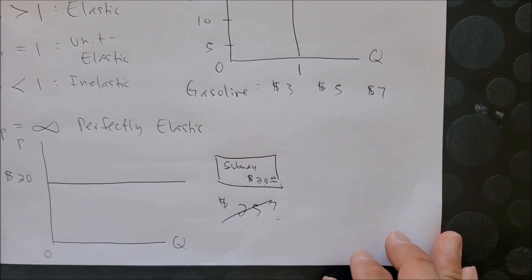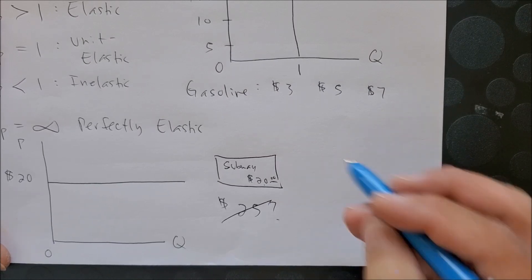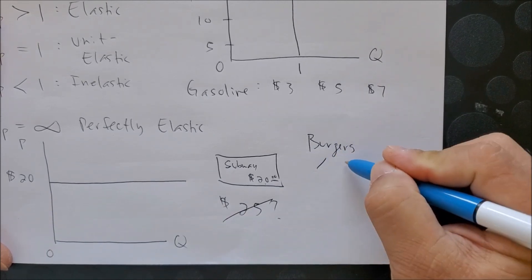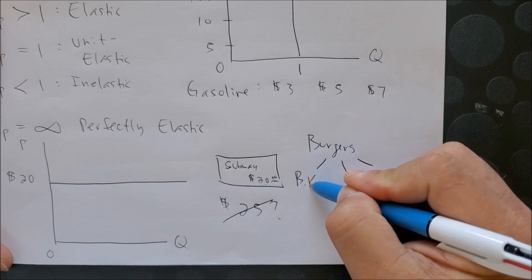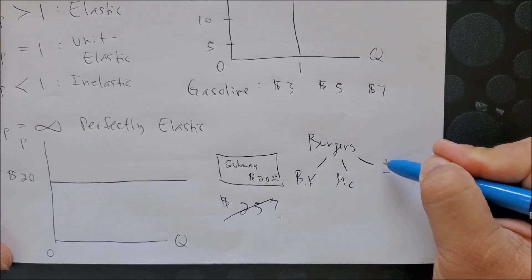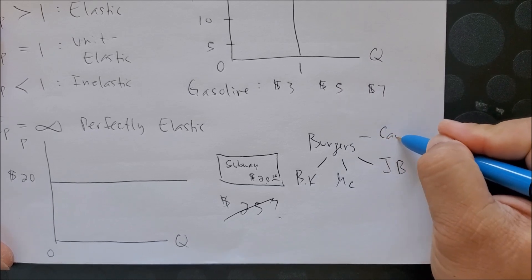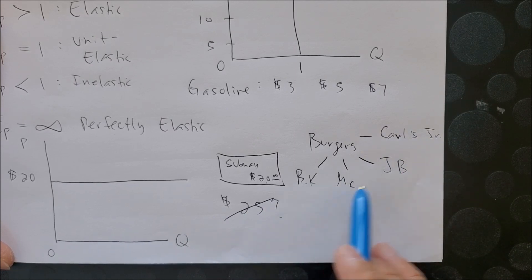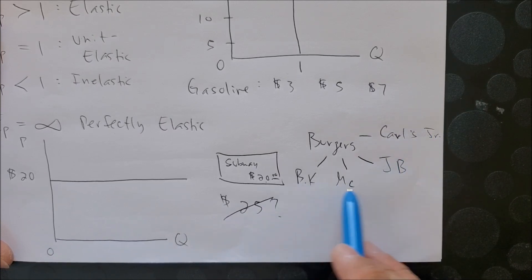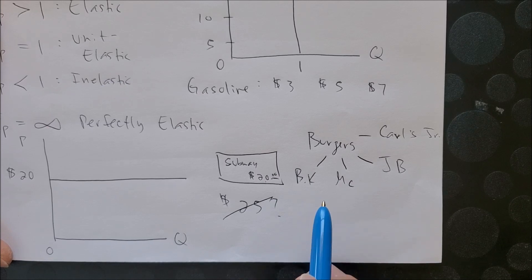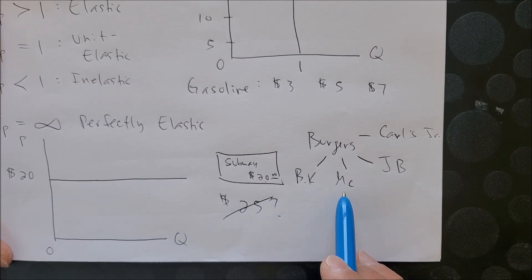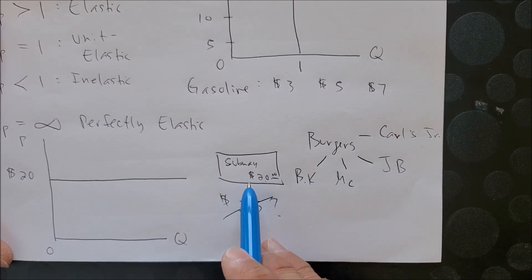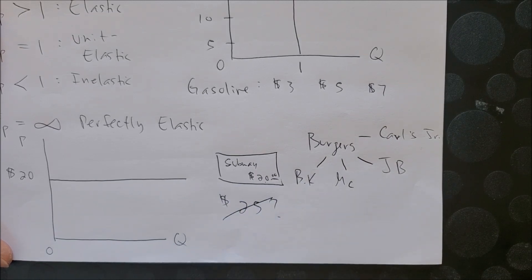For example, look at burgers. You have many options for hamburgers from Burger King, McDonald's, Jack in the Box, and even Carl's Jr. When any of these franchises increase price for its hamburgers, you could easily substitute for a Whopper, a Big Mac, a Jumbo Jack, or a Superstar. So hamburgers would be in this case highly elastic, and that concludes price elasticity.